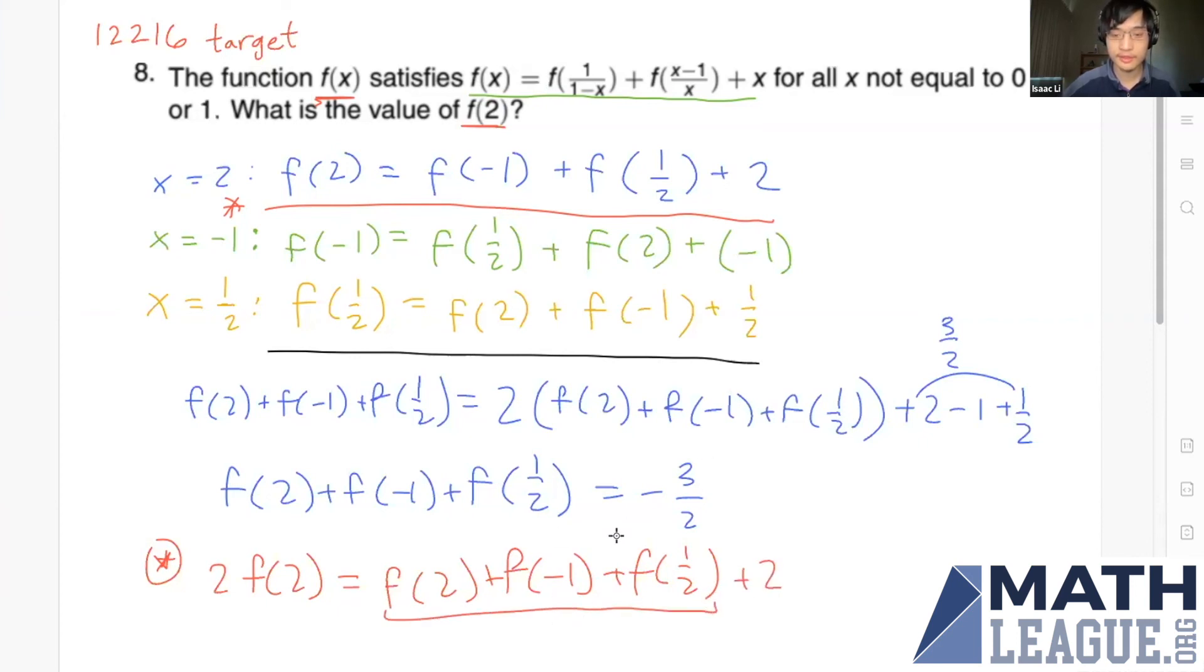This evaluates to -3/2 + 2 = 1/2. Therefore, f(2) = 1/4. That is our answer.